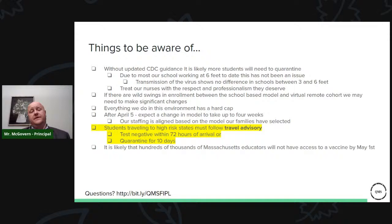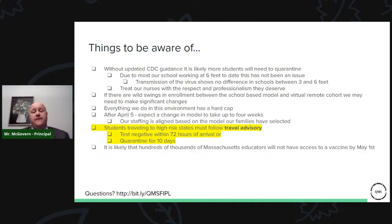If there were ever a massive swing in student model changes, we wouldn't be able to run things as currently structured — though I don't expect that. I'm confident students will have the same teachers on April 5th that they have April 2nd, unless changing models. Everything in this environment has a hard cap — we can't squeeze kids into classes or platoons without room. After April 5th, be prepared for a model change to possibly take up to four weeks.